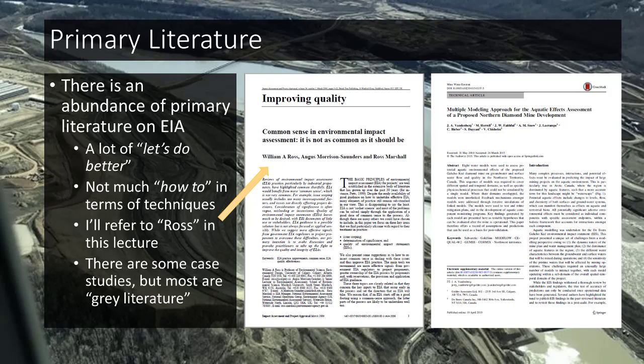Bill Ross, incidentally, taught me many years ago at the University of Calgary. He's also the chair of a joint review panel — the decision maker on a lot of big projects. A joint review panel is a panel of experts set up jointly by a province and the federal government to decide whether a project is in the public interest. He has some very interesting commentary in that paper.